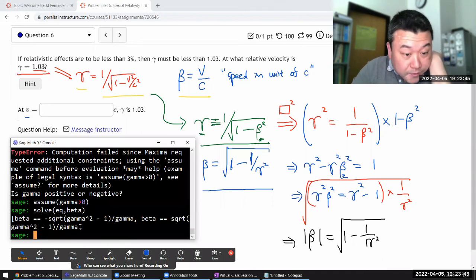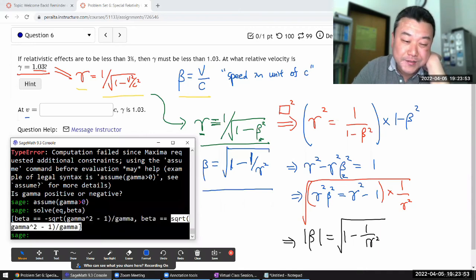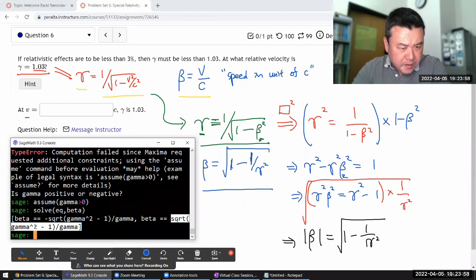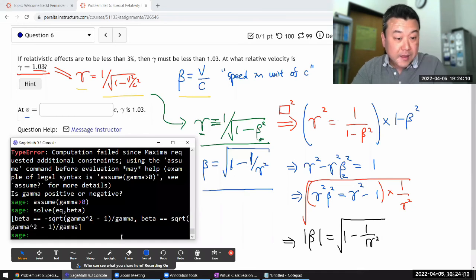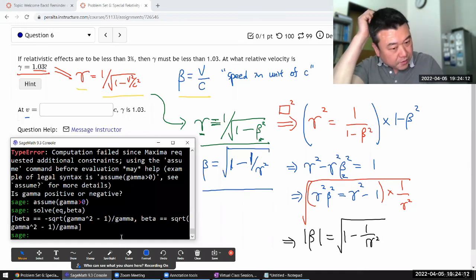It gives me an answer. I guess it doesn't mind that this expression here could result in imaginary expression, which is fine. But yeah, beta is equal to square root of, and the way it's expressed here right now, it's square root of gamma squared minus one, square root closed, divided by gamma. But when you work this all out, then that's that.